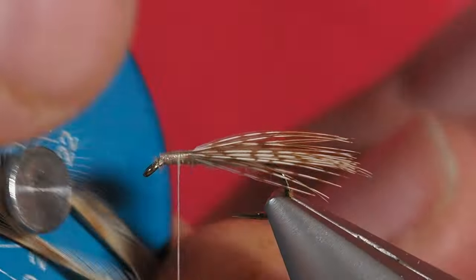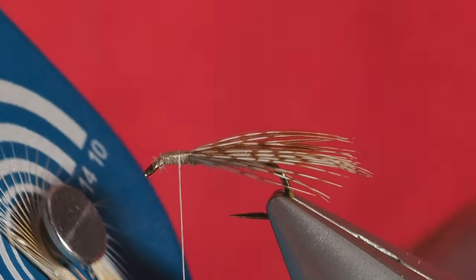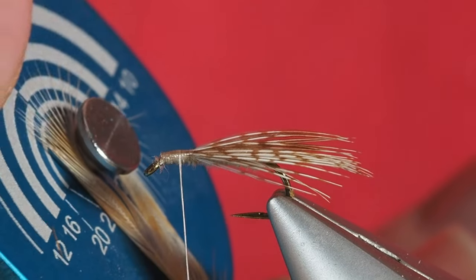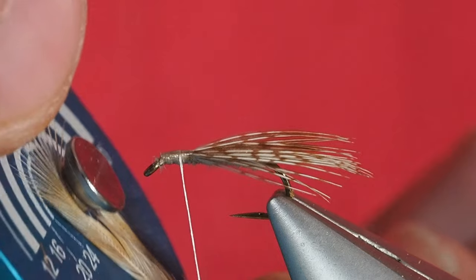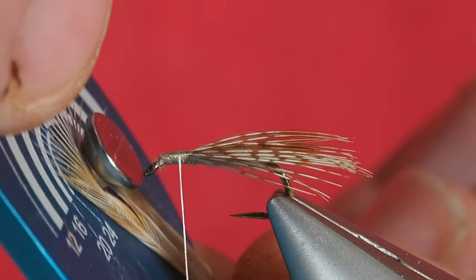When I pull that hackle against that gauge, what I'm looking for is a hackle fiber where these fibers are sticking out to about 16, because that's the size of hook that I'm using. This is just about the size that I want. That's how you're going to measure your hackle to make sure you get the right hackle size.